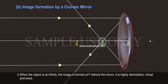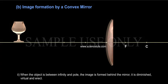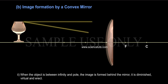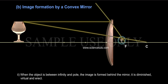Second, when the object is between infinity and pole, the image is formed beyond the mirror. It is diminished, virtual and erect.